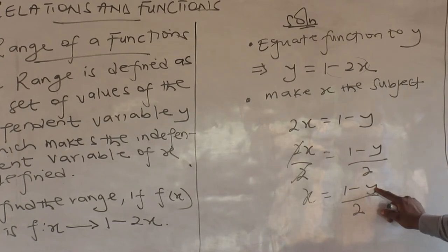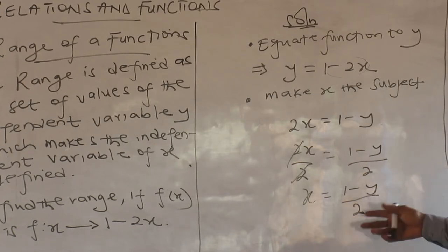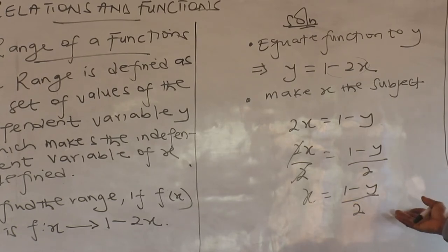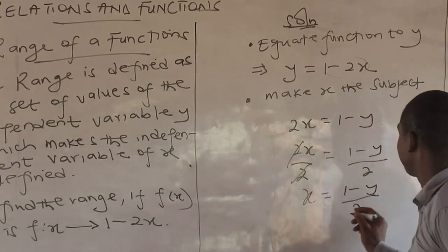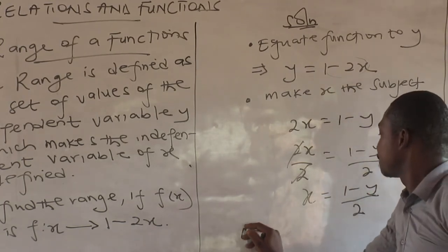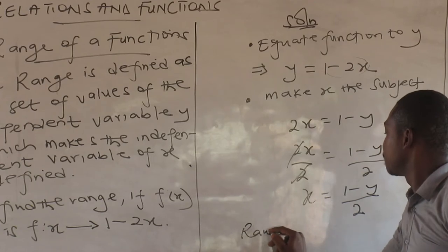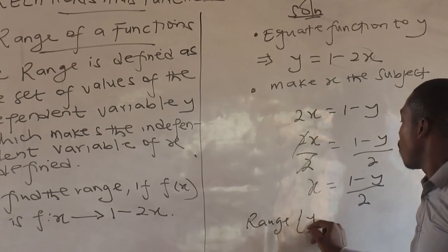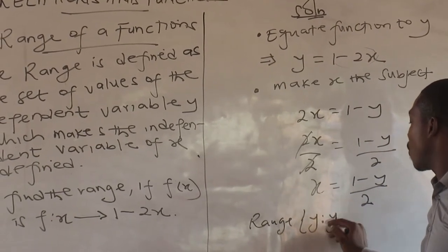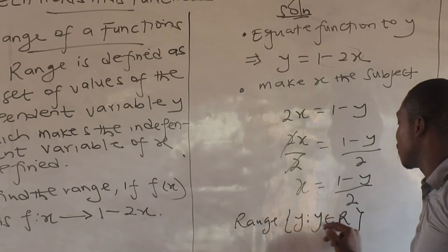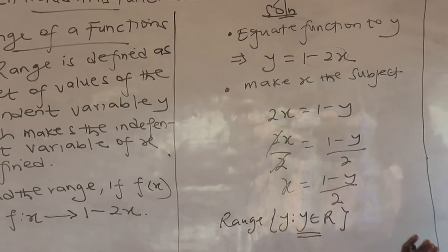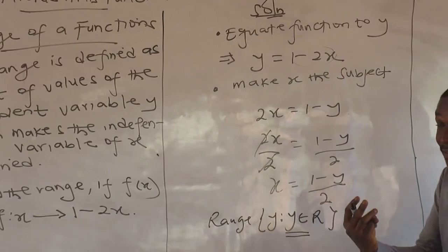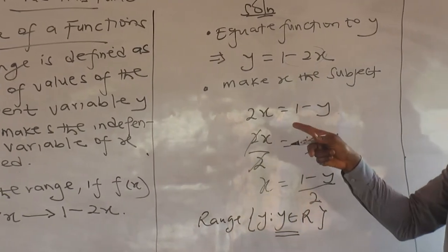Is there any value here that can destroy this or make it undefined? If y is zero, that's one over two — it's defined. Negative values — still defined. So the range is: y is such that y belongs to all set of real numbers.